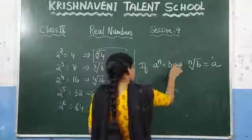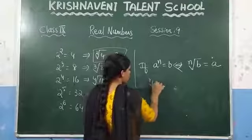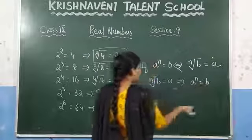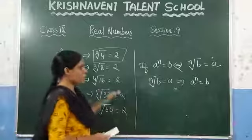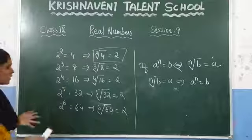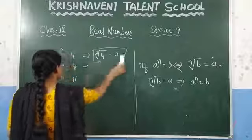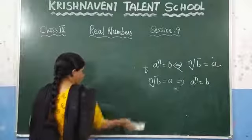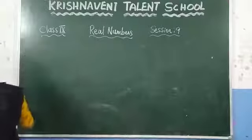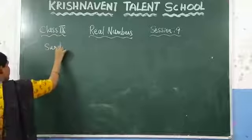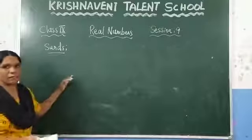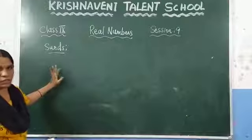You can also write this in reverse: if the Nth root of B is equal to A, then A power N is equal to B. Now the next concept is nth root and surds. Surds are nth roots when we cannot simplify a number to remove the square root, cube root, or any root — that we call surds.